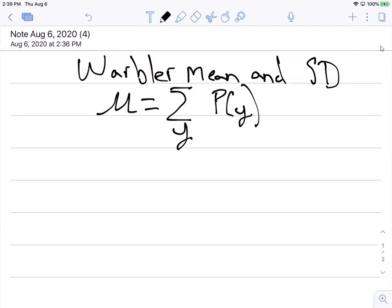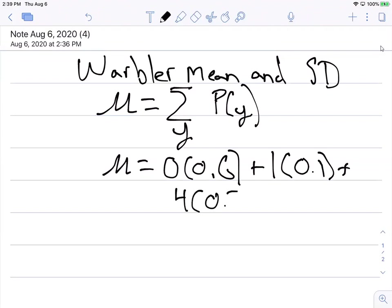In this case we can sum all of them and multiply them by the probabilities. So mu is going to equal 0 times 0.6 plus 1 times 0.1 plus 4 times 0.3. Remember we have the chance of seeing 0, 1, or 4 birds with a probability of 0.6, 0.1, and 0.3.